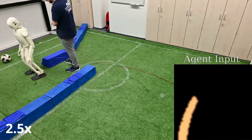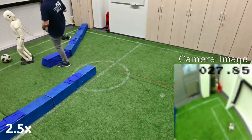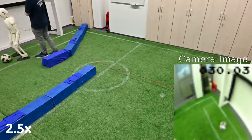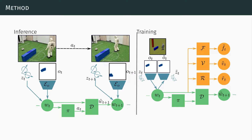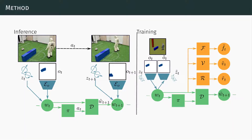The robot is supplied with image observations, as well as other sensor outputs such as trunk rotation estimates. Similar to the Dreamer framework, we use these observations to learn a latent world representation W, and corresponding latent dynamics D. This learned latent space is utilized by an actor-critic policy Pi to produce actions A.